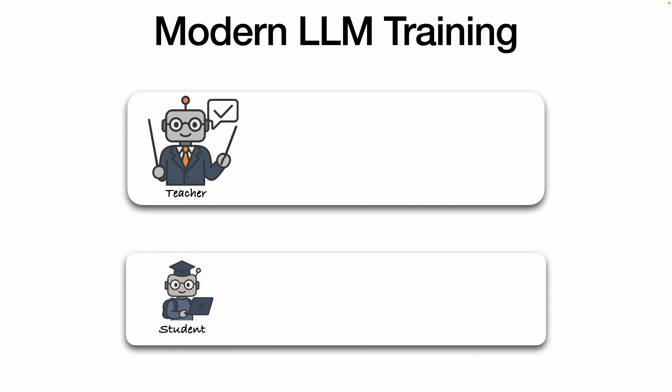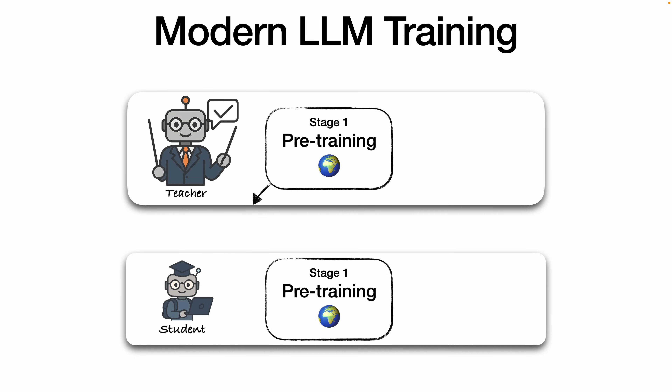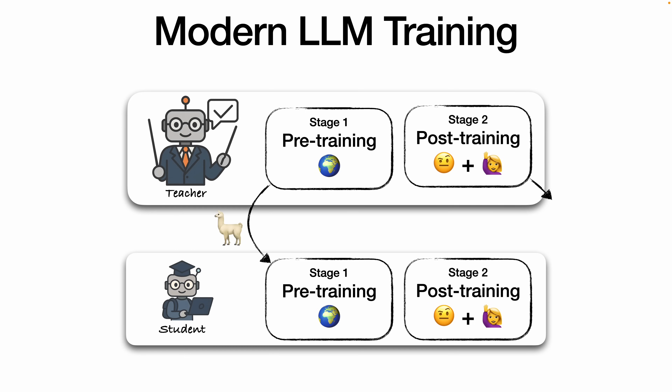When distilling LLMs, the first question is: where — at what stage of the training pipeline should we apply distillation? Option 1 is pre-training, when we train the models on a huge dataset scraped from the internet using next-word prediction. That's what Llama 4 seems to do, based on their blog post. Option 2 is post-training, when we fine-tune the LLM on question-answer pairs to align it with human preferences and tweak its reasoning abilities — this is where DeepSeek operates. And finally, option 3 is to apply distillation during both stages, like Gemma 3 does.